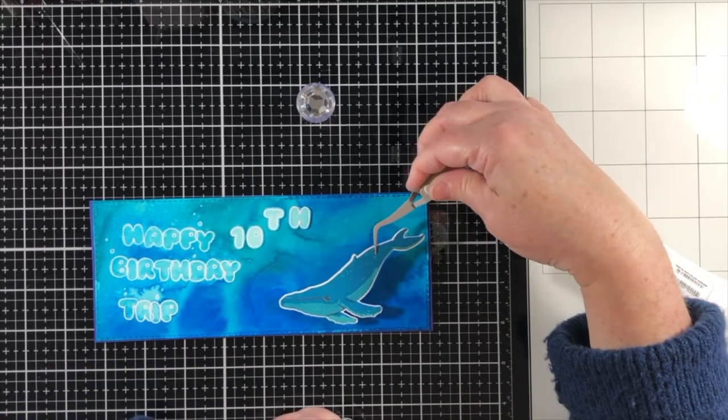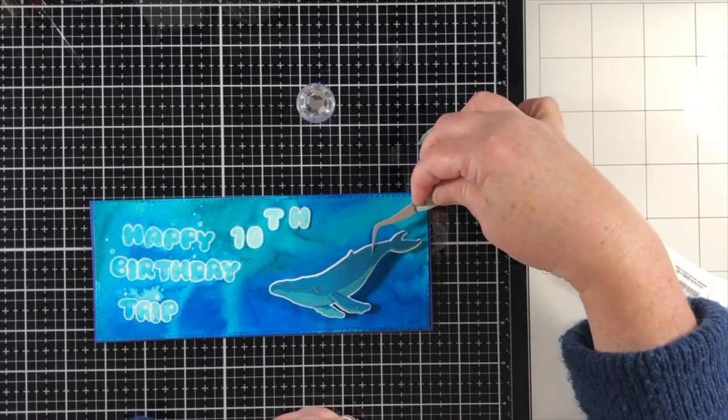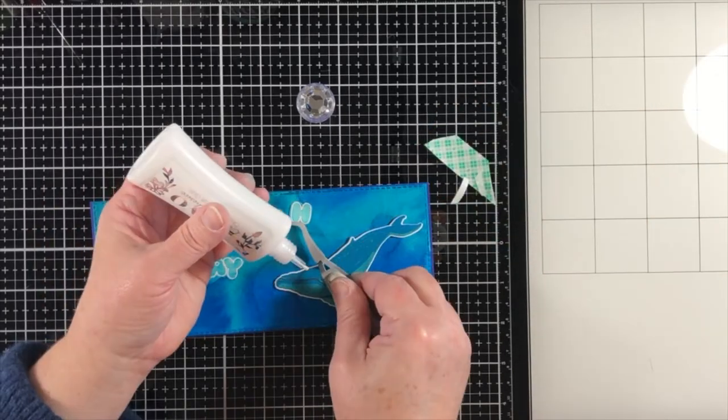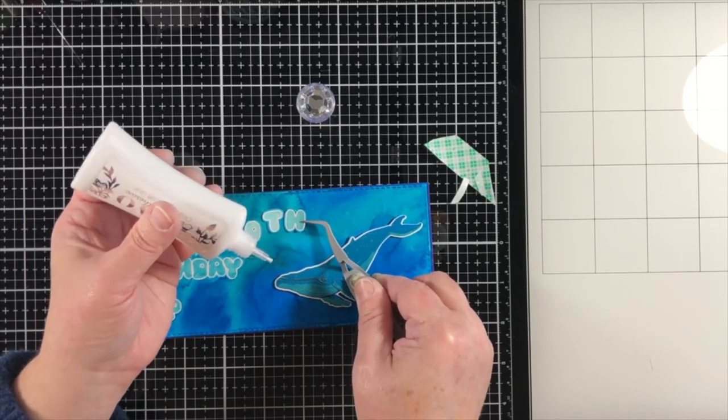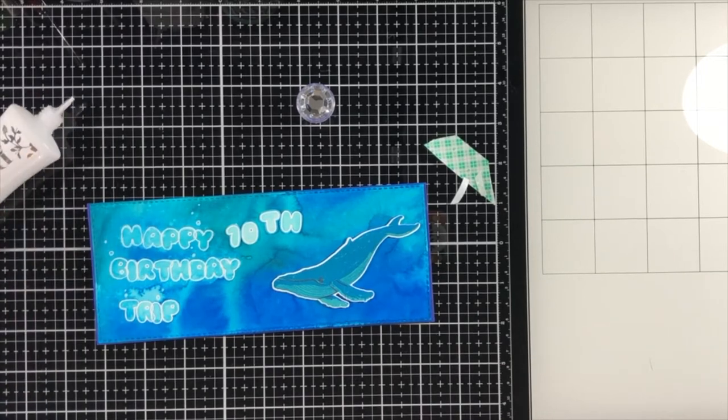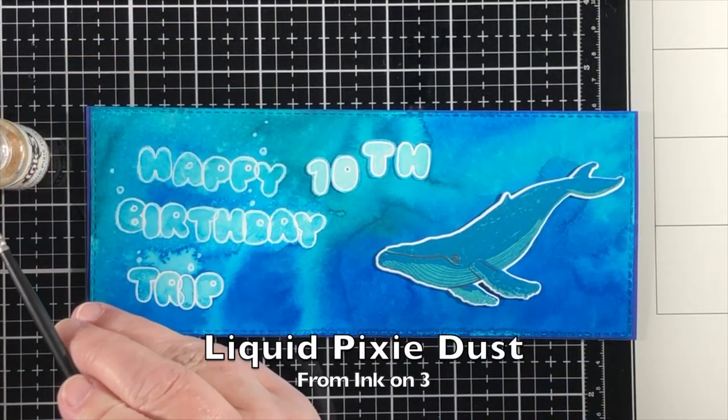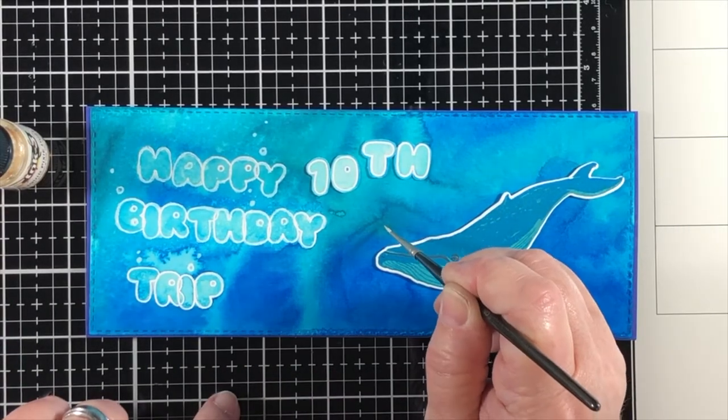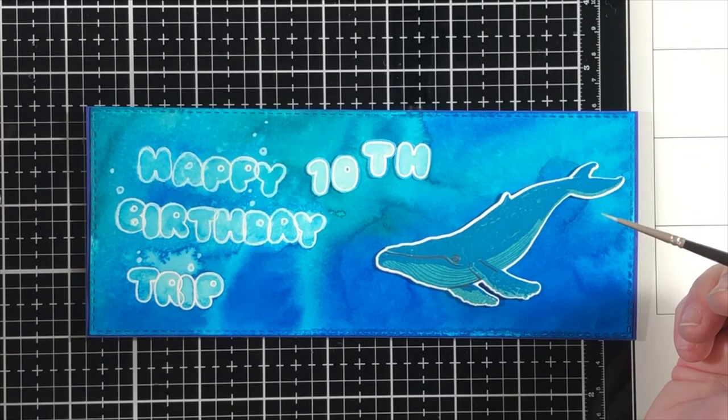So I've got some double sided foam on the back of the whale. And I die cut that with the coordinating die from Hero Arts. And now I'm going to adhere these letters with liquid glue. I'm not popping them up. Watercolor paper is thick enough that I did not feel like I needed to add any foam underneath it. But I used liquid glue to adhere those and they kind of look like they're floating up, like bubbles.